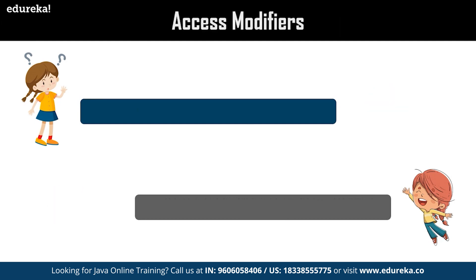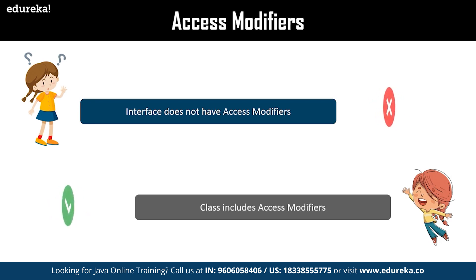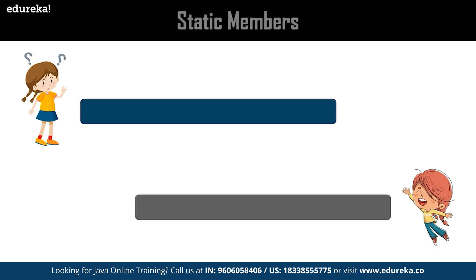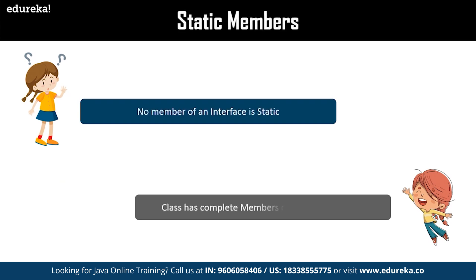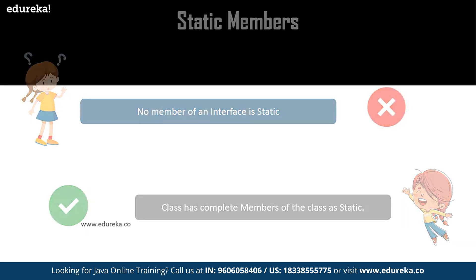The next difference is access modifiers — interfaces do not have access modifiers; by default, interfaces take public as their access modifier, whereas classes provide private access modifiers which are not available in interfaces. The next difference is static members — interface cannot have any static members, whereas a class has all its members as static.